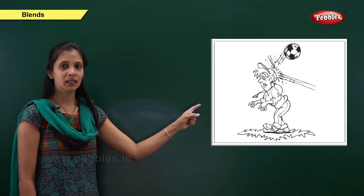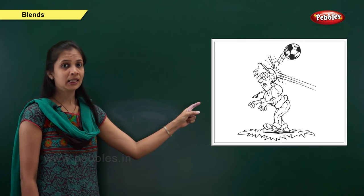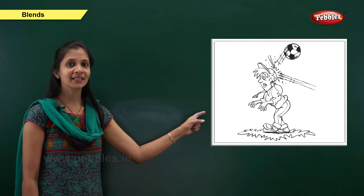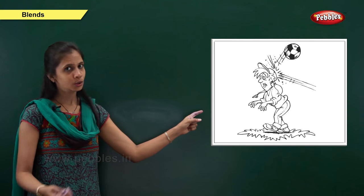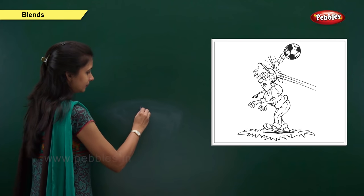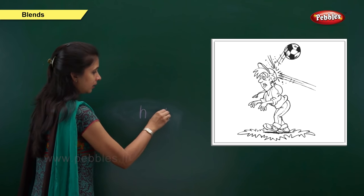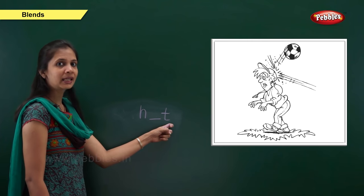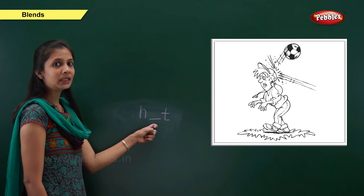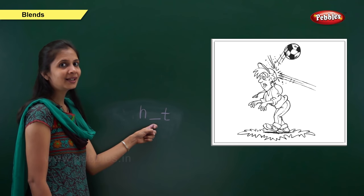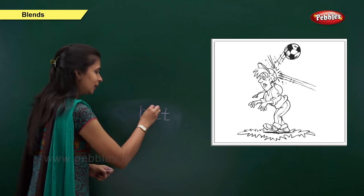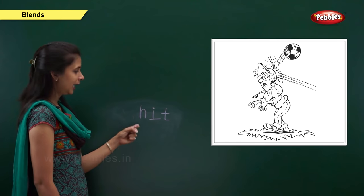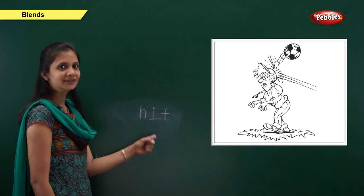Next one. Which picture is this? Yes, it is hit. What is the sound of this word? It is h, e, t. When the beginning sound is 'h', the letter is h. When the ending sound is 't', the letter is t. When the middle sound is 'e', the letter is i. Yes, it is i. The vowel i. So: h, e, t — hit. H, i, t — hit.